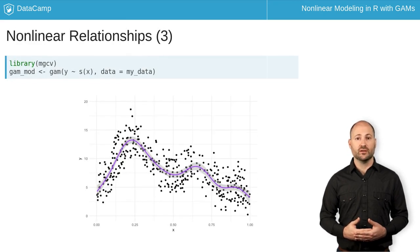With a GAM, however, we can fit data with smooths, or splines, which are functions that can take on a wide variety of shapes. We fit a GAM using the GAM function from the MGCV package. Here, when we fit this GAM, we wrap the independent variable x in the s, that is, smooth function, to specify that we want this relationship to be flexible. A GAM can capture the non-linear aspects of not only this relationship, but of many non-linear relationships, because of the flexibility of splines.